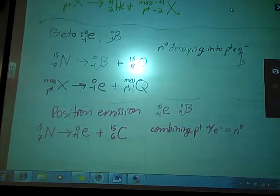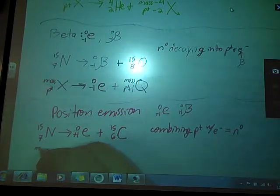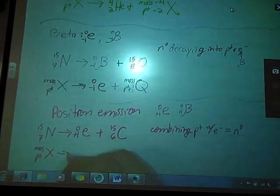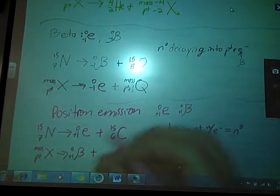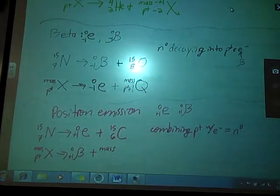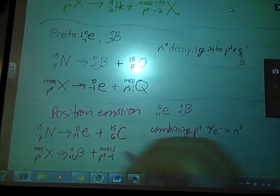So our mass with our protons emits a beta particle. My mass number stayed the same, but I lost a proton.